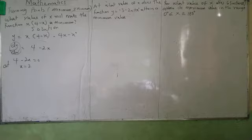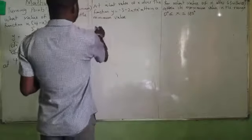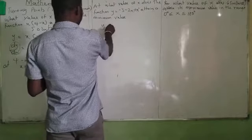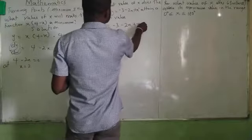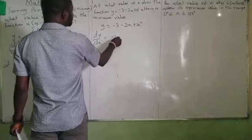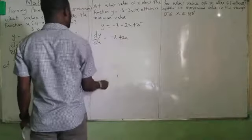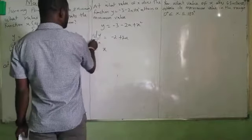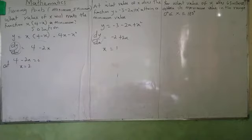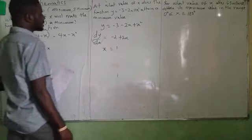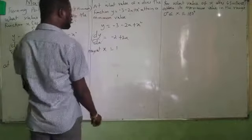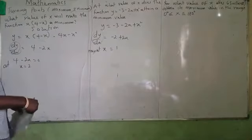For the second problem, Y equals 3 minus 2X plus X squared. Differentiating gives dY/dX equals minus 2 plus 2X. Setting this to 0 gives X equals 1. So the function reaches its turning point at X equals 1. Remember, whenever you are looking for maximum or minimum, you have to set the derivative to 0.